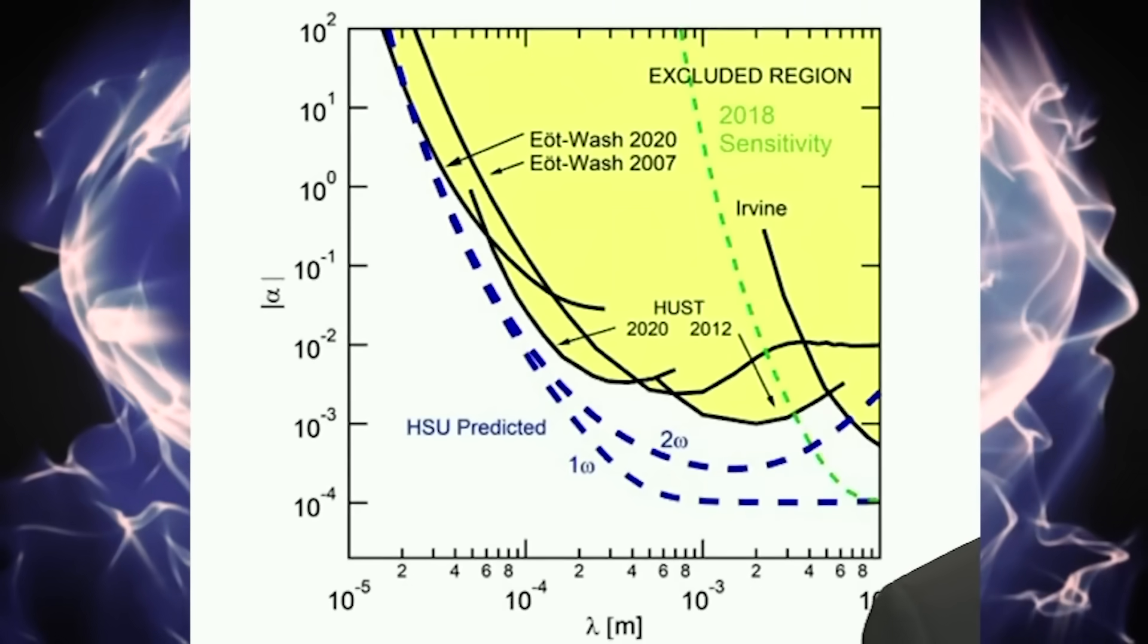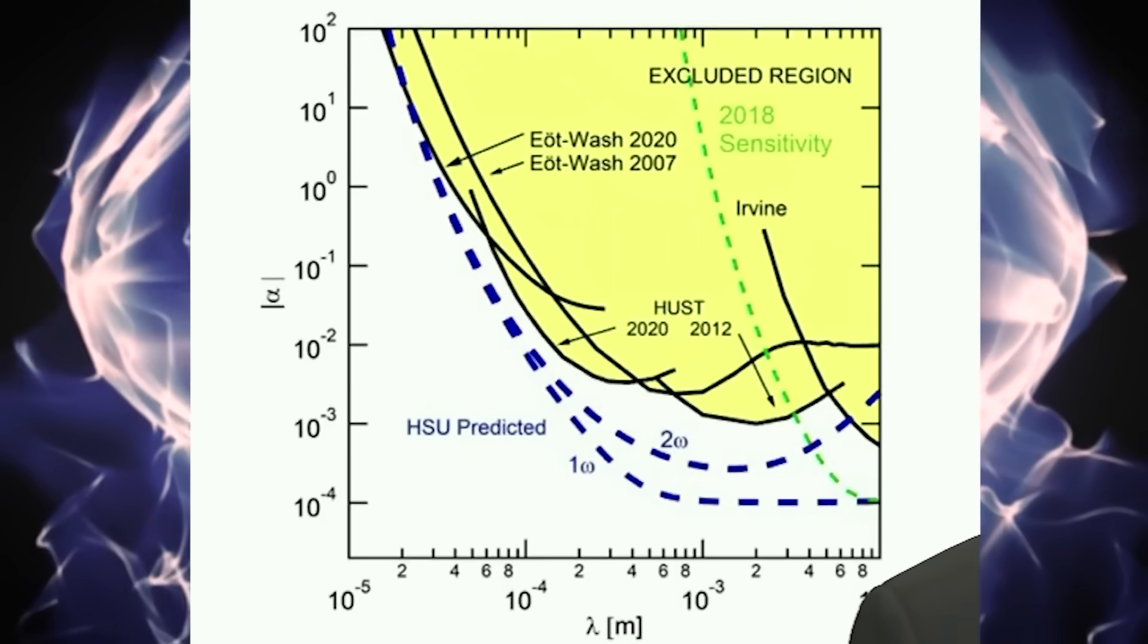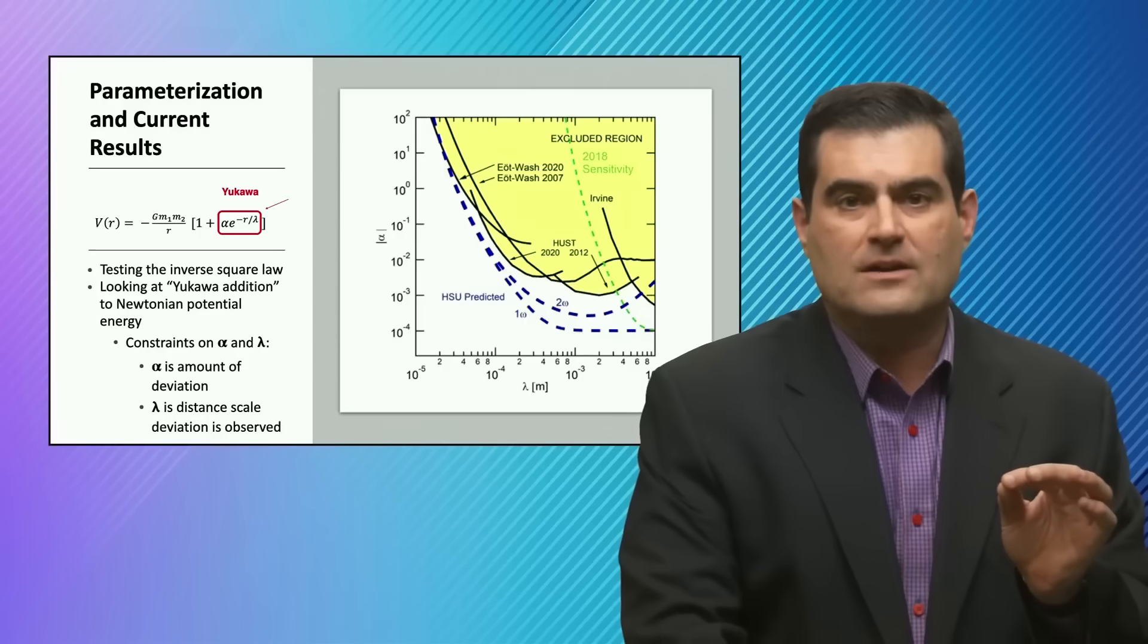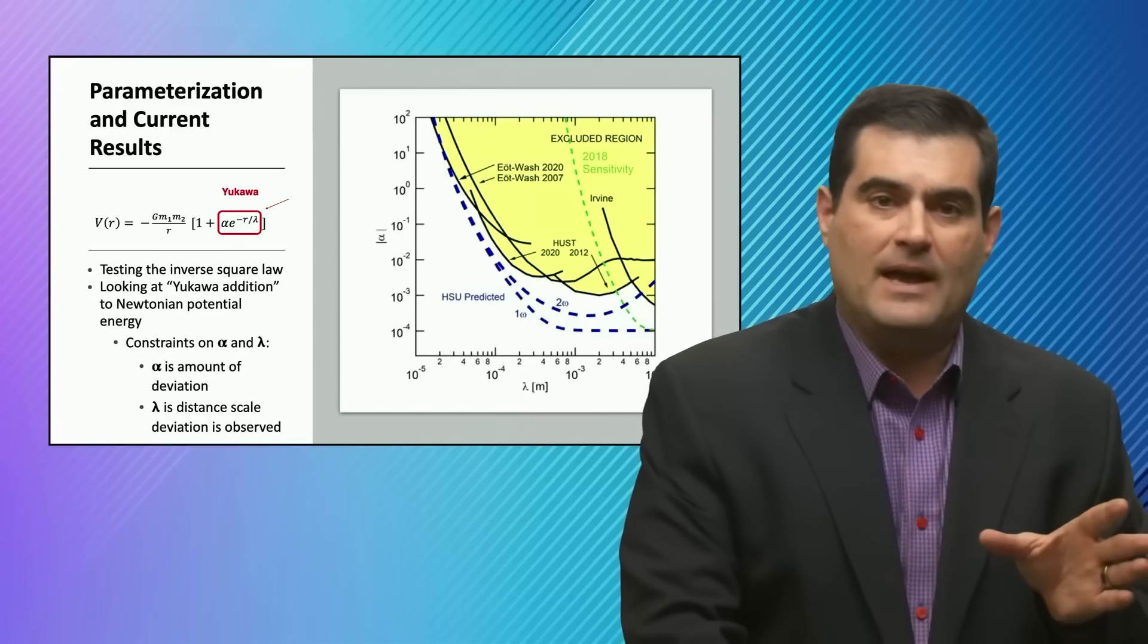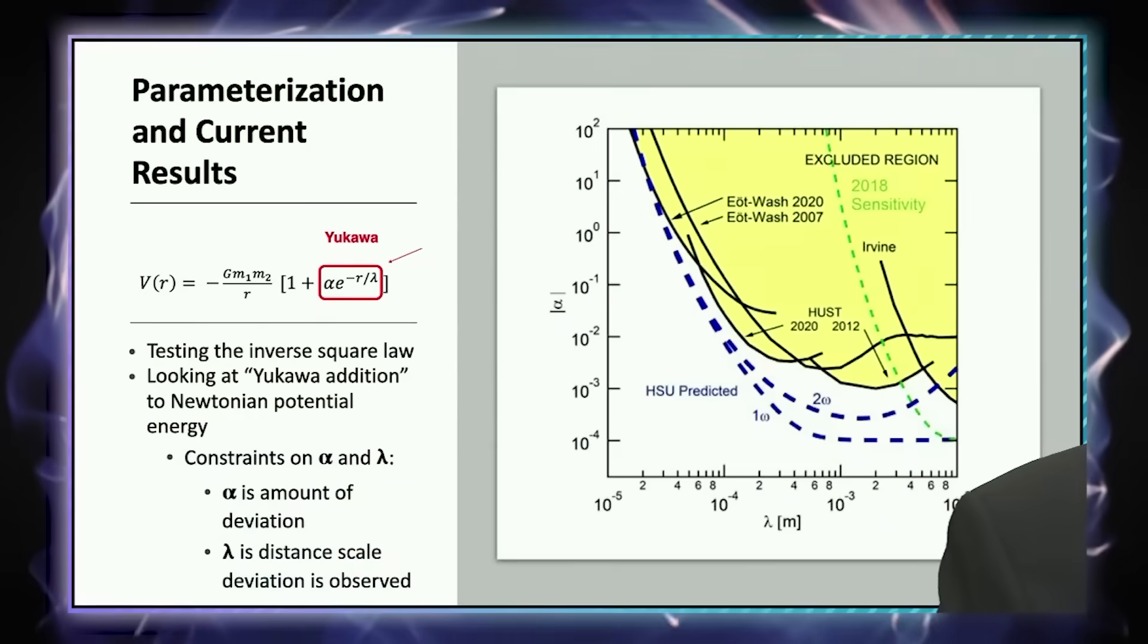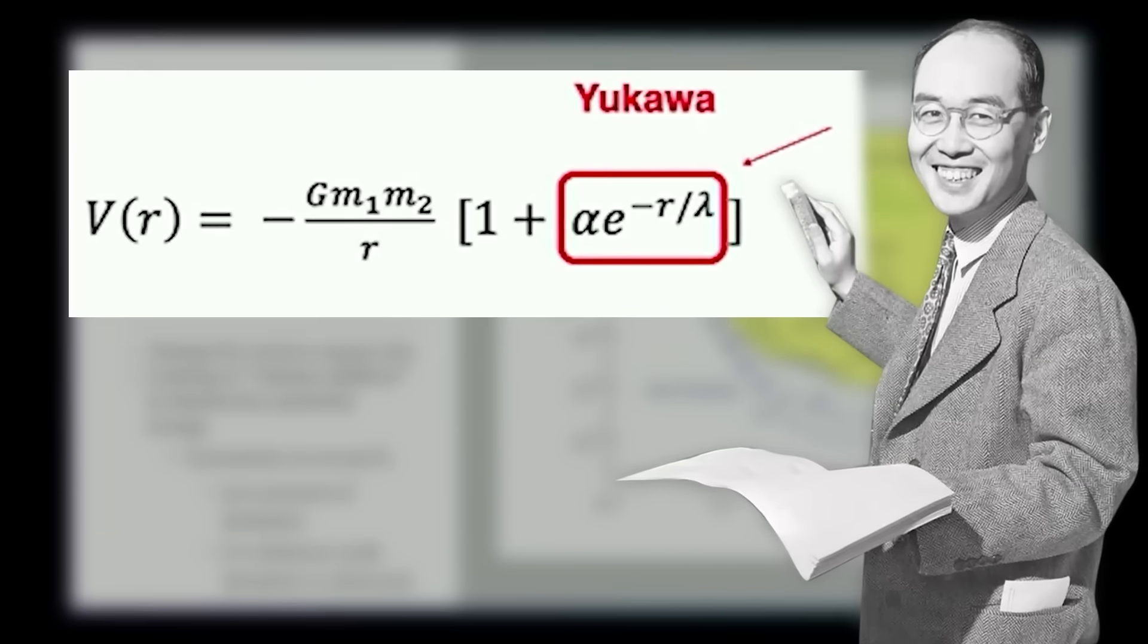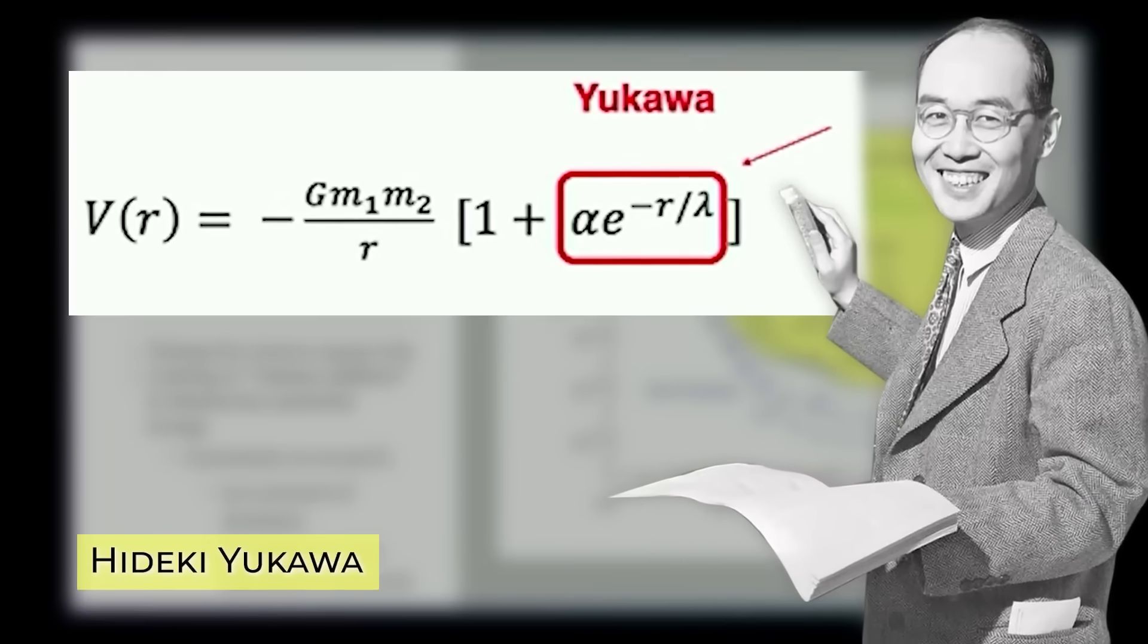In this case, the potential doesn't go just as one over r. The first leading term in the equation for V as a function of r does depend as inverse on the distance, but then there's a modification, a so-called Yukawa term which traces its name to the famous Japanese physicist Yukawa.